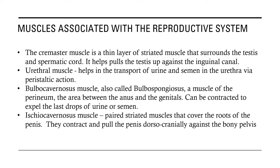Then we have the ischiocavernous muscle. It is a paired striated muscle that covers the roots of the penis. They contract and pull the penis dorsocranially — toward the head — against the bony pelvis. Those are the muscles associated with the reproductive system; they help the other organs perform their functions.